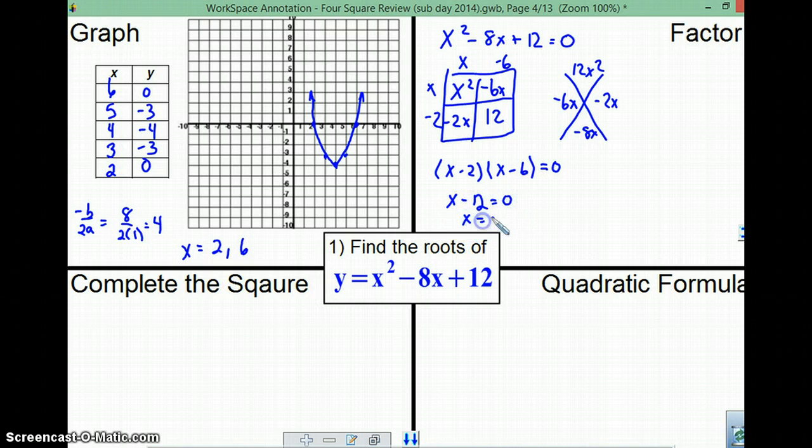So, we say x minus 2 equals 0. So, x equals 2. If we add 2 to both sides, x minus 6 equals 0. That should be 0. Add 6 to both sides. x equals 6.